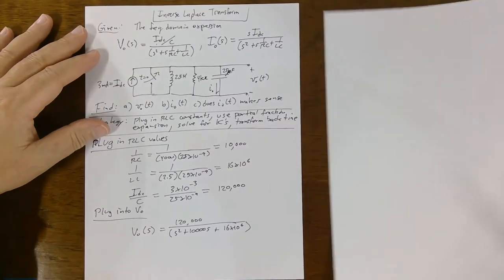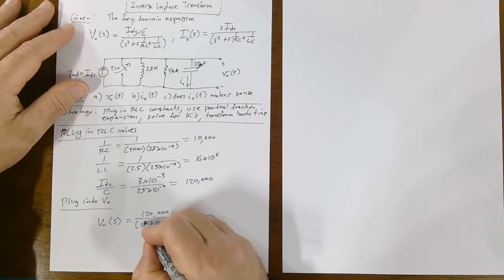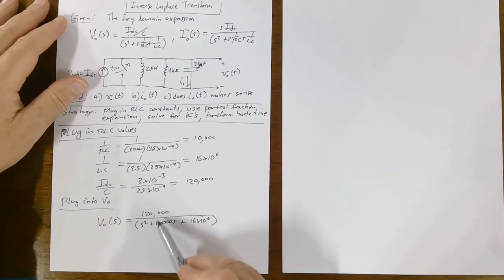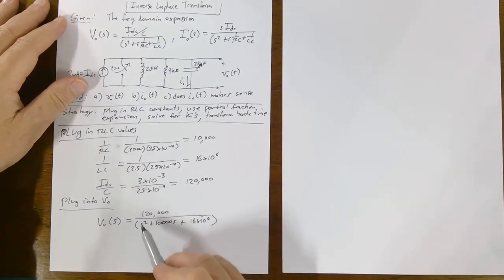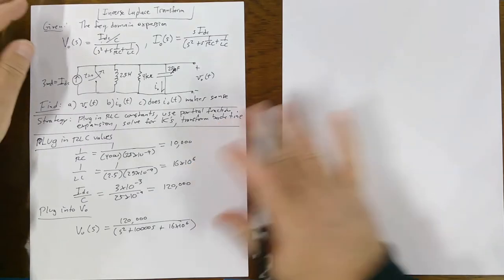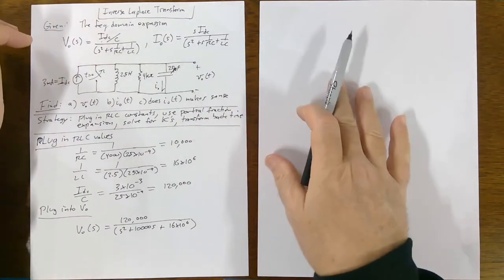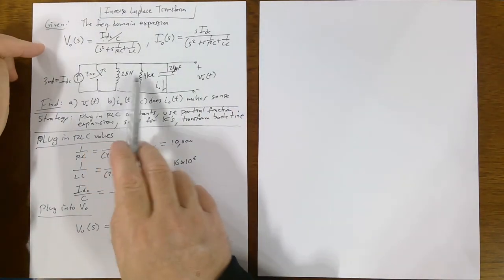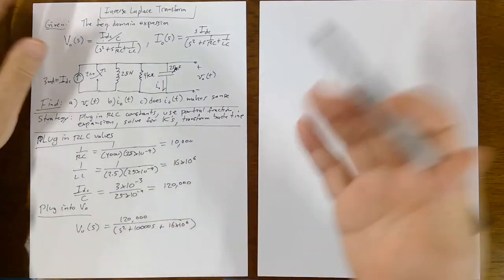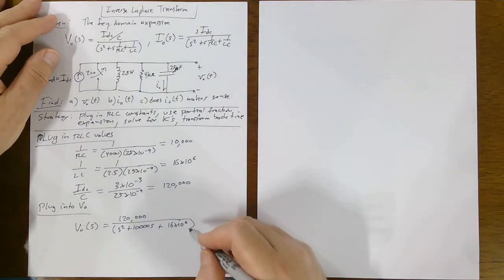That's a proper rational function — a ratio of two expressions where the denominator has a power of 2, so we can pull this thing apart. Once the RLC values are locked in, you can't change them. But we can perform the partial fraction expansion. First thing we need to do is find the roots.